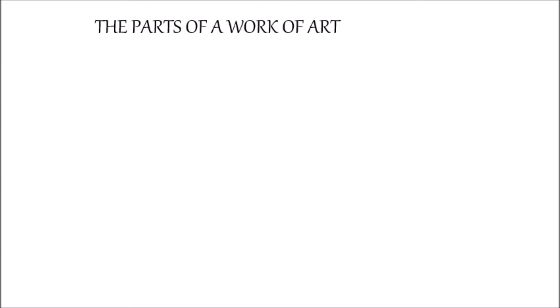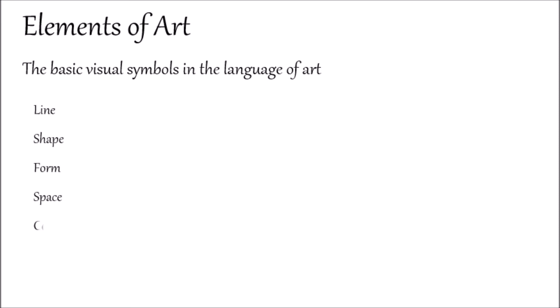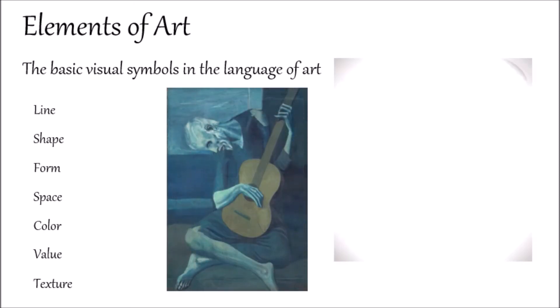The parts of a work of art: all artwork contains subject matter — the image viewers can easily identify in a work of art — the composition, which is the way the principles of art are used to organize the elements of art, and the content, which is the message the work communicates. The elements of art are the basic visual symbols used in an artwork. It's easiest to think of them as the nouns, verbs, and adjectives of an artwork. Just like grammar, how you arrange these building blocks determines whether you create a sentence or a paragraph — or in our case, a painting or a sculpture.